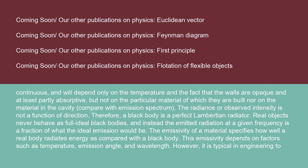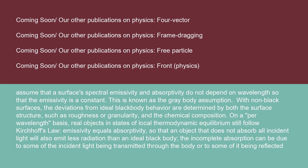The radiance or observed intensity is not a function of direction; therefore, a black body is a perfect Lambertian radiator. Real objects never behave as full ideal black bodies, and instead the emitted radiation at a given frequency is a fraction of what the ideal emission would be. The emissivity of a material specifies how well a real body radiates energy as compared with a black body. This emissivity depends on factors such as temperature, emission angle, and wavelength. However, it is typical in engineering to assume that a surface's spectral emissivity and absorptivity do not depend on wavelength, so that the emissivity is a constant — this is known as the gray body assumption.